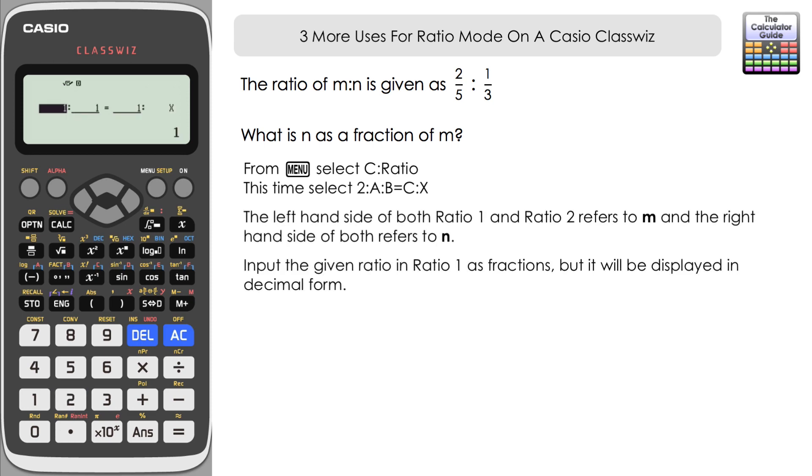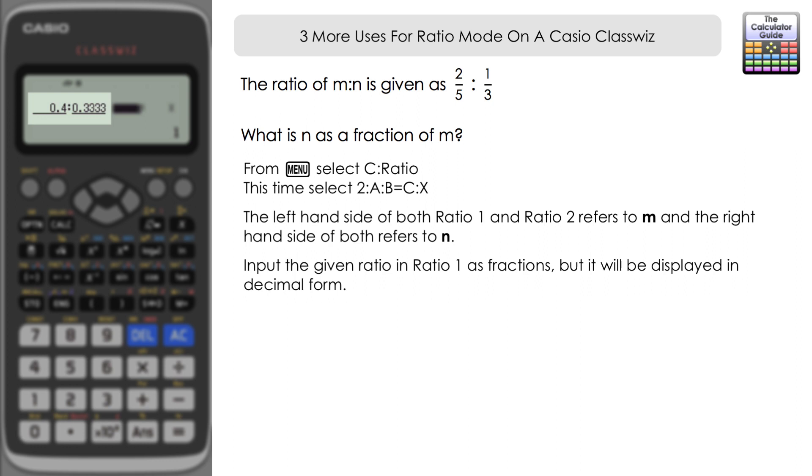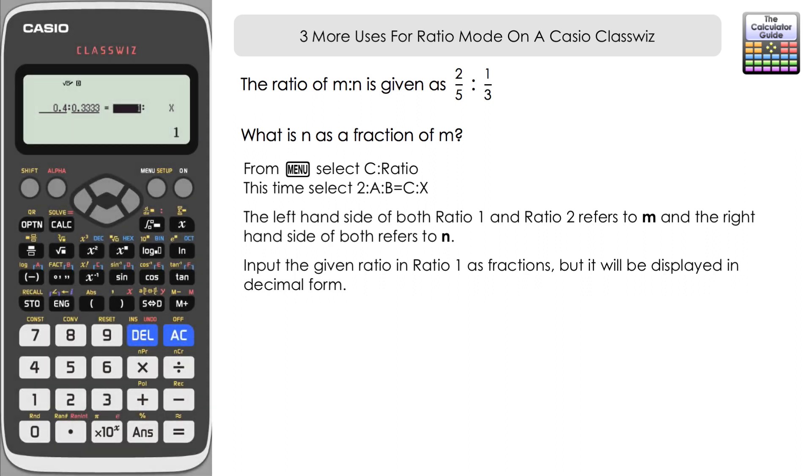On ratio 1, on the input screen, we're going to input the ratio that we know, which is two-fifths to one-third. You can input these as fractions. But the way it will display it in the actual ratio is in decimal form. So you can see we've got 0.4 and 0.3 recurring, although it only displays four decimal places.